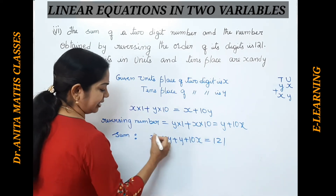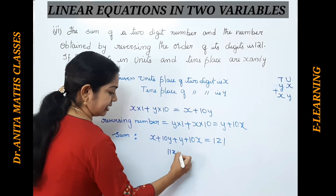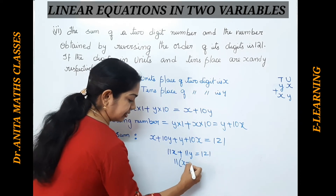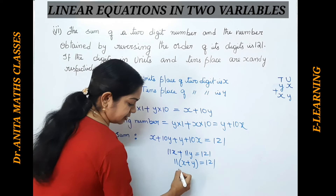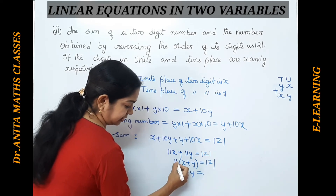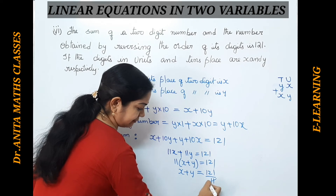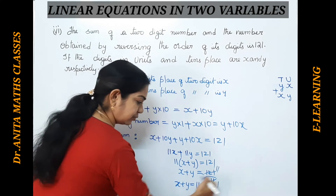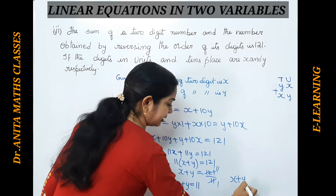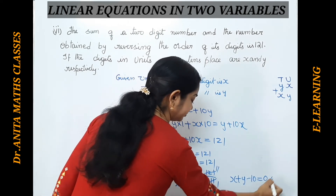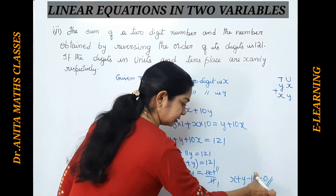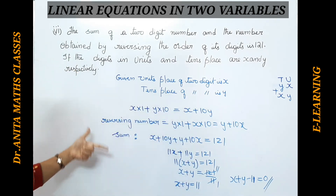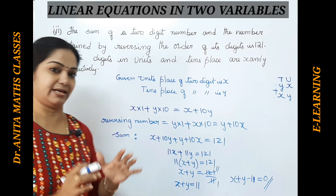Adding like terms: X + 10X = 11X and Y + 10Y = 11Y, so 11X + 11Y = 121. Taking 11 as common: 11(X + Y) = 121, so X + Y = 11. The general form is X + Y − 11 = 0. This is the linear equation in two variables, and with this we have completed this exercise.